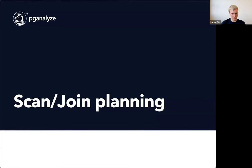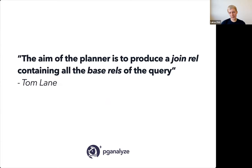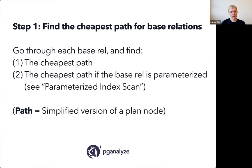Let's talk about scan/join planning. The aim of the planner is to produce a join rel containing all base rels of a query. A join rel is a data structure in the planner representing joining one table with another. A base rel means an individual table. Postgres tries to find first the cheapest path for each base relation — 'path' essentially means plan node in the simplified planner structure — and it also finds the cheapest parameterized path for each base rel. We'll come back to parameterized index scans in a moment.